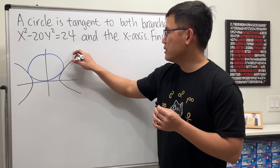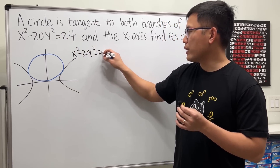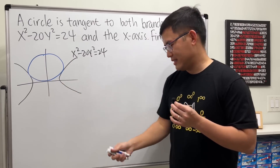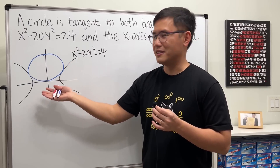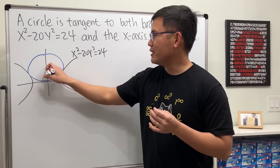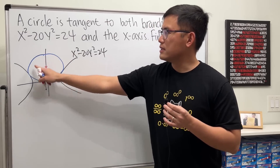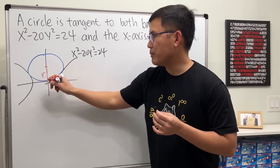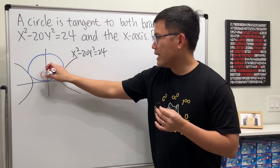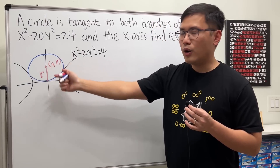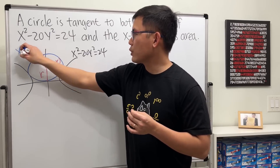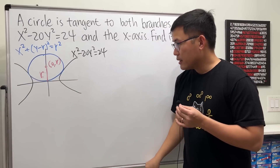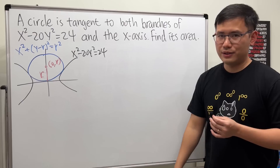The hyperbola equation is x² − 20y² = 24. To write the equation of the blue circle, we need the center and the radius. By symmetry the center must lie on the y-axis, and since the circle is tangent to the x-axis, the distance from the center to the x-axis equals r. So the center is at (0, r) and the circle's equation is x² + (y − r)² = r².